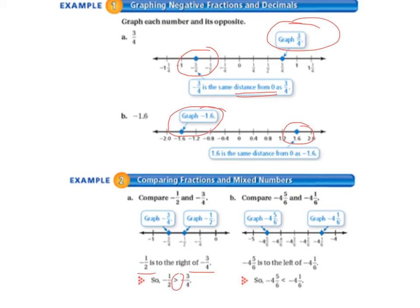Now we're going to compare negative 4 and 5 sixths to negative 4 and 1 sixth. Negative 4 and 5 sixths is graphed here, and negative 4 and 1 sixth is over to the right. Since negative 4 and 5 sixths is to the left of negative 4 and 1 sixth, then negative 4 and 5 sixths is less than negative 4 and 1 sixth.